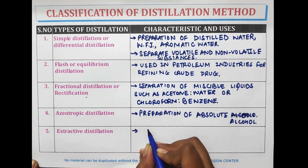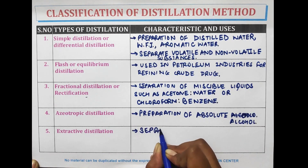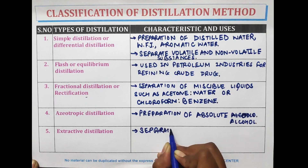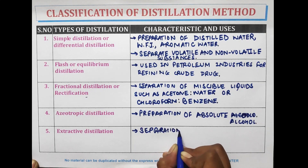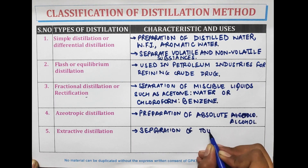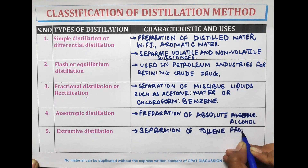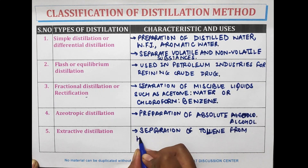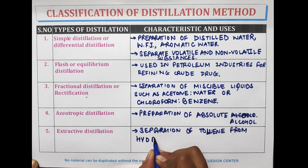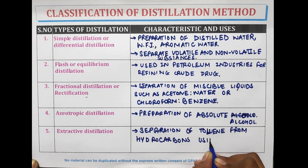Extractive distillation is used for the separation of toluene from hydrocarbons using phenol as the extractive solvent.